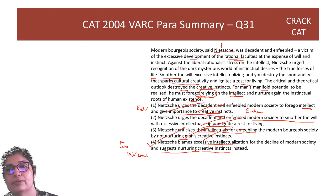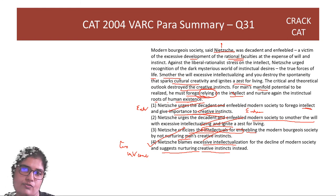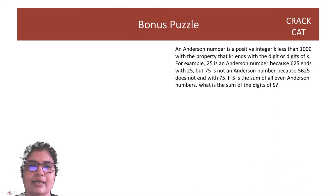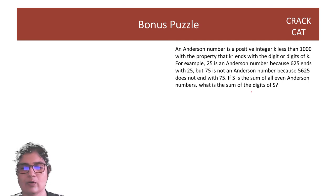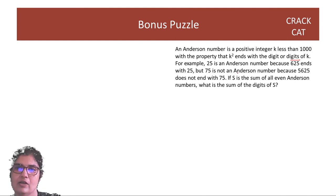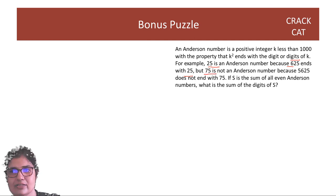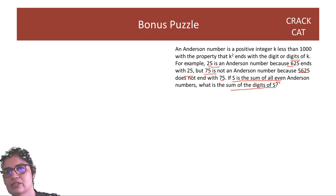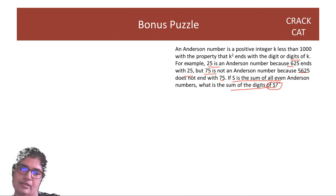I hope you liked this discussion. Current CAT questions are very close to this format. Let's look at your bonus puzzle: an Anderson number is a positive integer less than 1000 with the property that k-squared ends with the digit or digits of k. For example, 25 is an Anderson number because 625 ends with 25. But 75 is not because 5625 does not end with 75. If S is the sum of all even Anderson numbers, what is the sum of the digits of S? It's a slightly difficult question — please do give it a shot.